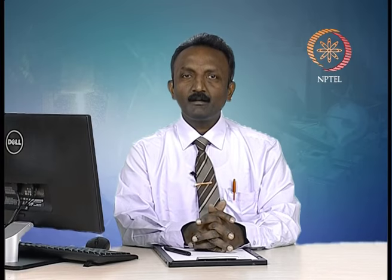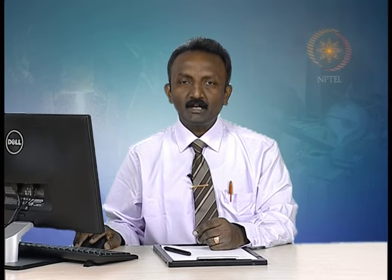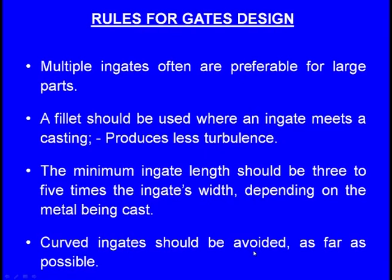Next, the ingates, also known as gates. Rules for ingate design: multiple ingates are often preferable for large castings. A fillet should be used where an ingate meets a casting, as it causes less turbulence. The minimum ingate length should be 3 to 5 times the ingate's width, depending on the metal being cast. Curved ingates should be avoided as far as possible.